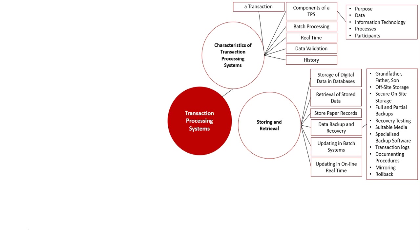For data backup and recovery, we look at a variety of methods. These include the grandfather-father-son method of updating and backing up data — both frequently and with full backups periodically — as well as off-site storage and secure on-site storage for keeping backed-up data safe. We also cover full backups, and partial backups such as differential and incremental backups, which only back up data not covered in a full backup.